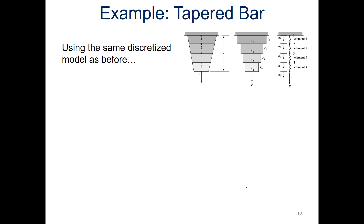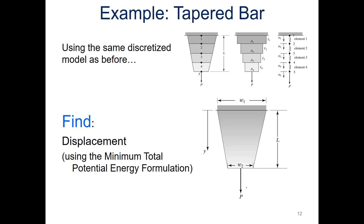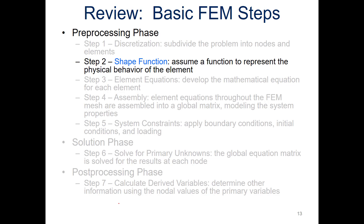Now we apply this to the tapered bar example from the direct formulation. We discretize it as before with five nodes and four elements. We want to find the displacement using the minimum total potential energy formulation. Since we already have it discretized (step one is done), step two involves determining the shape function based on the minimum total potential energy formulation — we need to come up with the strain energy as well as the work.